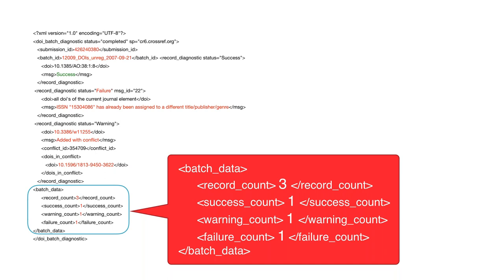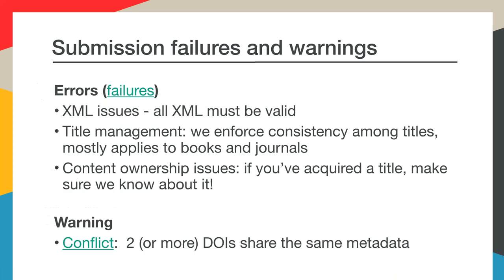If there are any failures — in this example you can see the failure count is 1 — then you'll need to address those because they mean the record wasn't added into our system. If you have a warning count, and you can see there's one in this example, it means that the record was added and the identifiers are registered, but something needs attention.